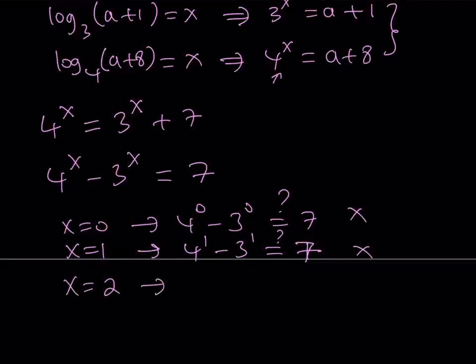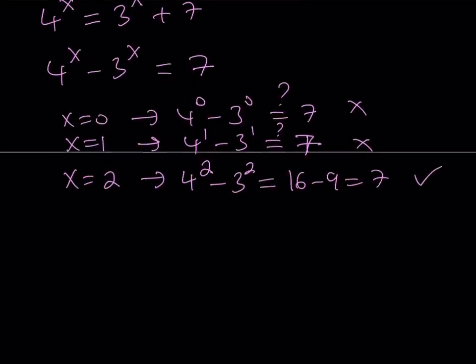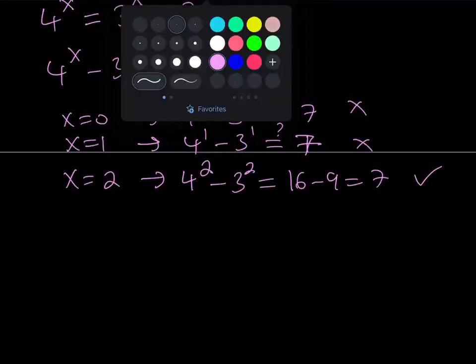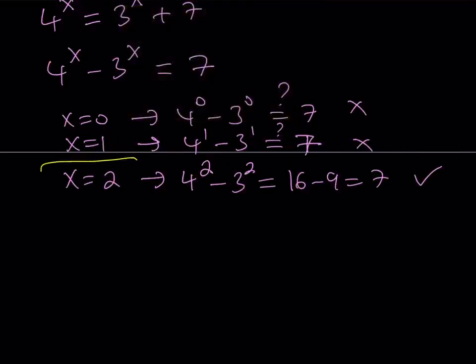And by the way, why am I using integers? Well, it makes sense because if you substitute non-integers like fractions or irrational numbers, then it's going to be hard to evaluate the powers plus their difference may or may not be 7. That's going to be harder to check. So, I started with basic cases. So, x equals 2 actually gives me a good hit. 4 to the second power minus 3 to the second power is equal to 16 minus 9. And that is equal to 7. Yay. We got a solution.